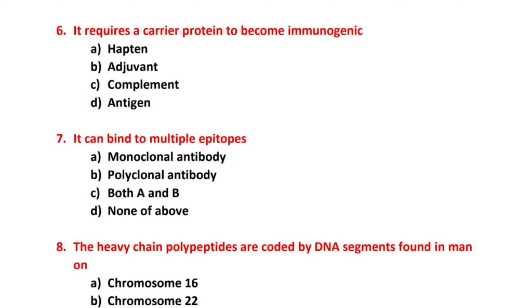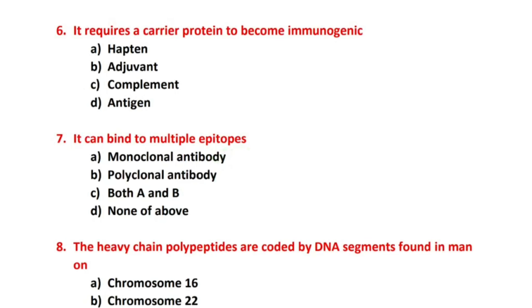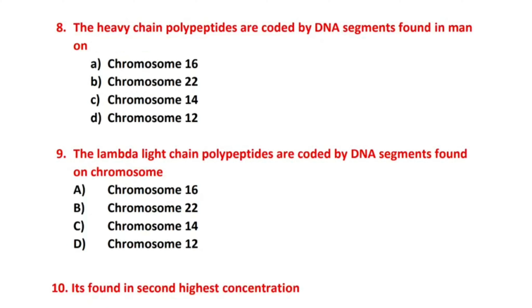Next, question number 7: It can bind to multiple epitopes. Option A: Monoclonal Antibody. Option B: Polyclonal Antibody. Option C: Both A and B. The right answer is B, polyclonal antibody, as it can bind to multiple epitopes.